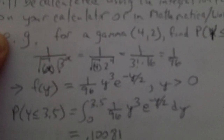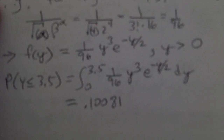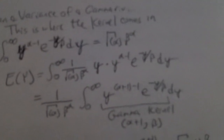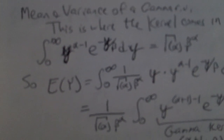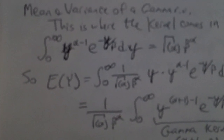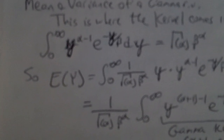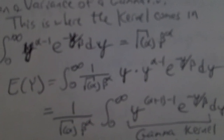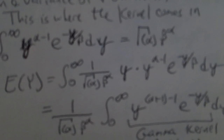We'll do the alpha-equals-one case in a couple of sheets, but that's it for now. Now, mean and variance. This is where the kernel becomes important. If you take the integral of the kernel over the entire domain — for a gamma, that's 0 to infinity — you get the reciprocal of the constant, as shown right there.